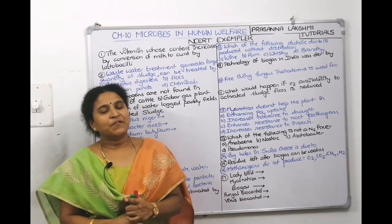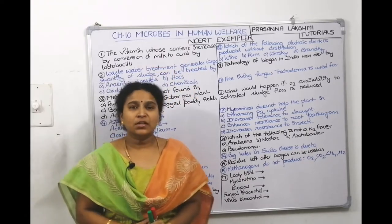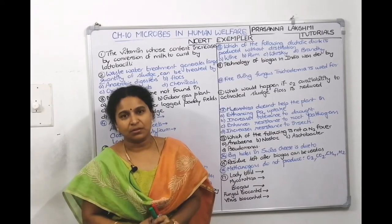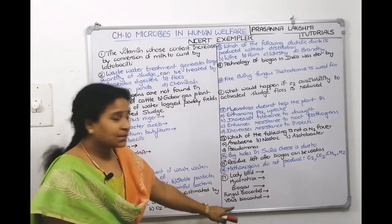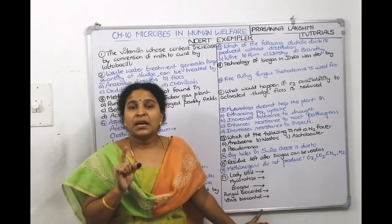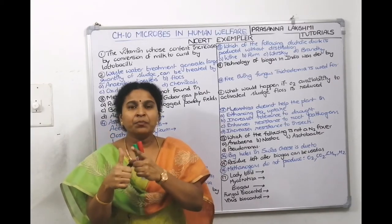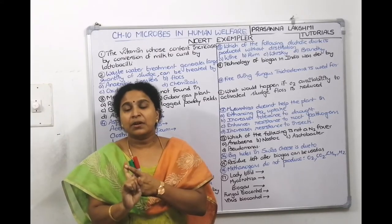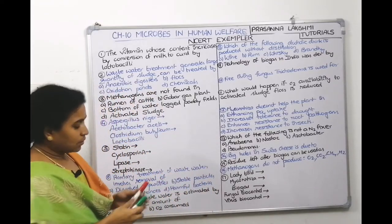Welcome everyone. We finished the chapter 'Microbes in Human Welfare.' We'll try to solve exemplar MCQs from this chapter. I have written all the exemplar questions — there are 17 MCQs related to this chapter. As I told you, NCRT textbook is your first book to crack, followed by NCRT exemplar questions.